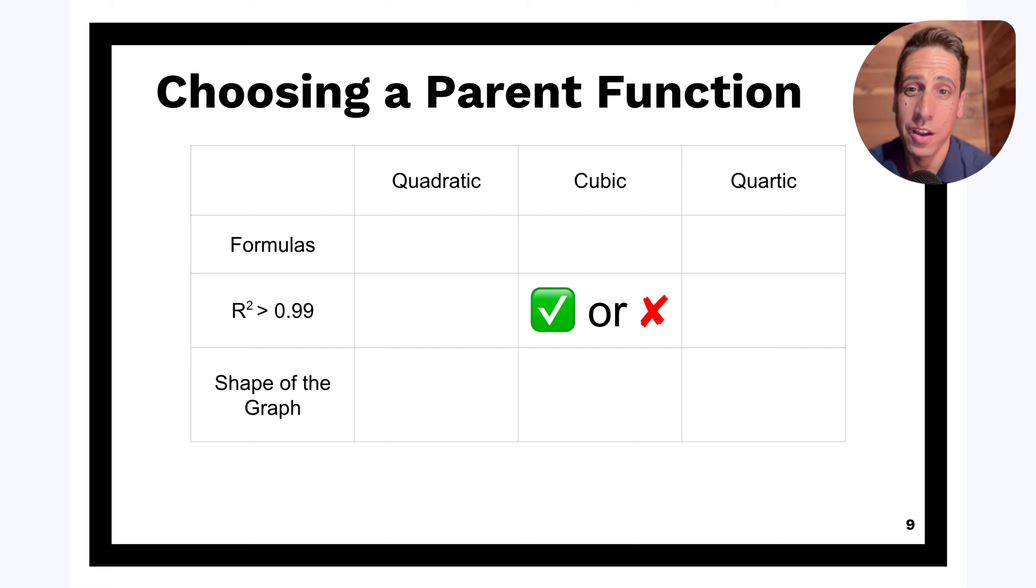But is it good enough? Like the cutoff here is 0.99. And if it's 0.99 or higher, then you can give it a green light and say, okay, this could be possibly the actual parent function that we want to use, the regression that we want to use. So if it's equal to 0.99 or less, then it gets a red flag and you don't have to use it or you can discard it and say, this is not what I'm going with. But if it's greater than 0.99, then it gets a green light and it could be one of the potential ones we could use.